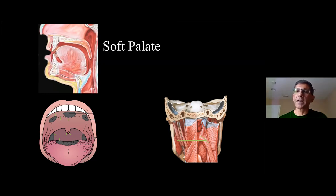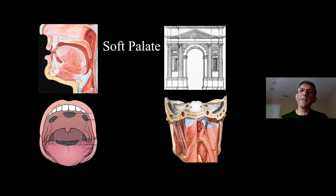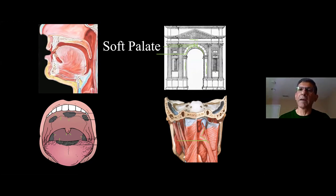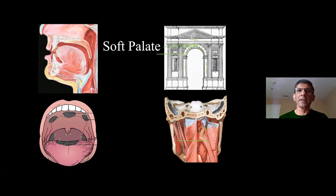In medical school I remember the levator and tensor veli palatini muscles that tether the palate to the skull base. I think of the soft palate as a Roman arch. The foundation pillars are the tonsillar pillars. The arch connecting them is the palatal arch. And the little structures tethering the palate to the skull base are the levator and tensor veli palatini muscles. The palate tends to be a midline structure, so tumors involving it tend to be circumferential rather than purely unilateral.